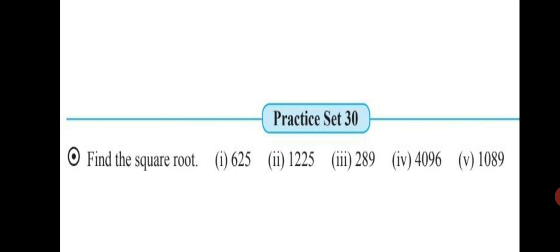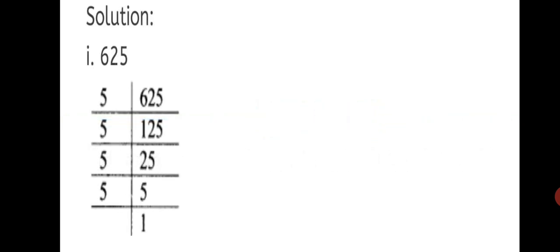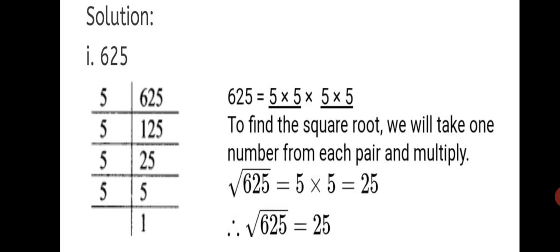Now we are ready to solve Practice Set 30 — find the square root. There are 5 questions. First: find the square root of 625. Since 625 is divisible by 5, we use 5 as the first prime factor. Step 2: 625 equals 5 into 5 into 5 into 5 — that's two pairs of 5. Step 3: taking one factor from each pair and multiplying: square root of 625 equals 5 into 5, which is 25. Therefore, the square root of 625 equals 25.